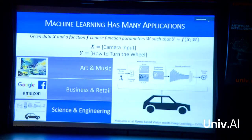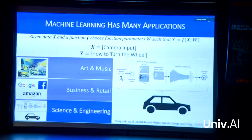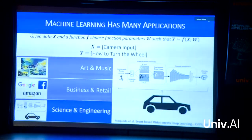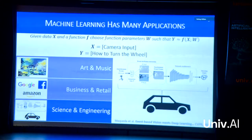As we get closer to science and engineering applications, you can imagine self-driving cars using machine learning. A car has a camera input, and the machine learning algorithm should tell the car how to turn the wheel so it doesn't crash. To make this work, you'd have many hours of camera input with someone driving, then train the algorithm — shown as a big complicated diagram — to turn the wheel. Eventually, if you've trained it enough, hopefully you have a car that cannot crash.